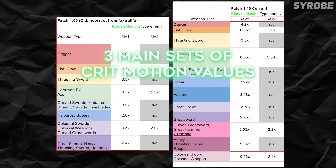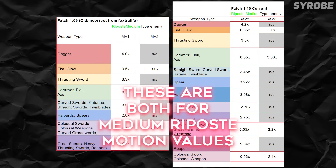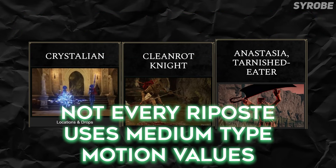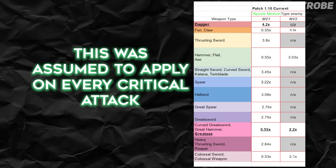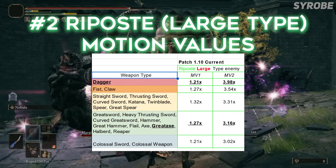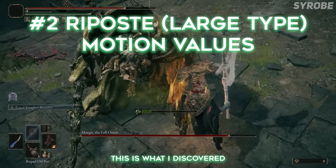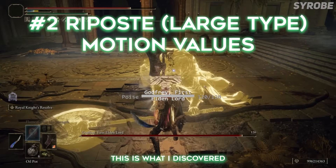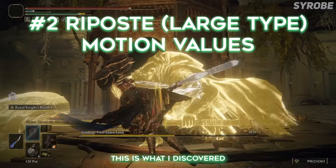There are three main sets of motion values for every weapon, which change depending on what type of enemy you're performing a critical attack on. Both tables of motion values shown are specific and are only applied when you repost a medium-type enemy, which consists of humanoid enemies roughly the size and shape of a player, like Crystallians, Cleanrot Knights, player NPCs, and literal other players. The existence of the large-type enemy classification is what I found — it refers to when players perform repost attacks against enemies far larger in size than the player, which happens to be the case with pretty much every boss in Elden Ring and a vast majority of enemies you'll encounter.